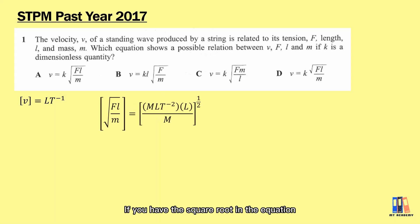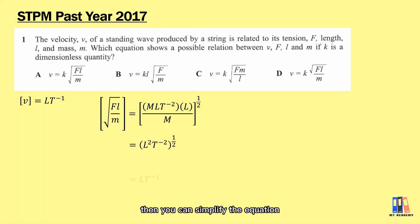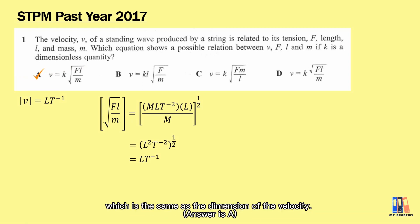If you have the square root in the equations, just convert it into the form of indices, which is to the power of 1 over 2. Put in the dimension of each of the variables, and then you can simplify the equations using the knowledge of indices. In the end, you should obtain the dimension of L per T, which is the same as the dimension of velocity.